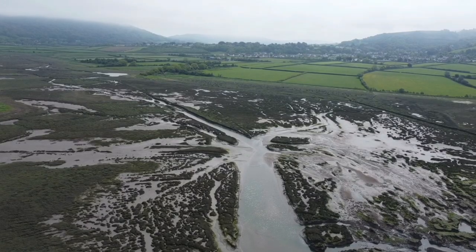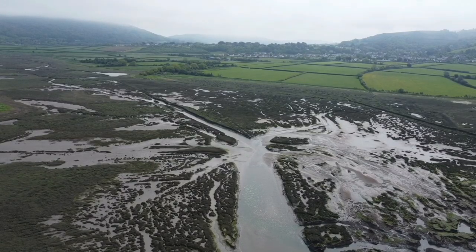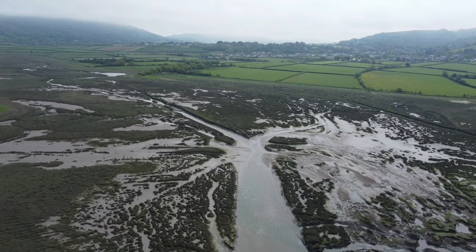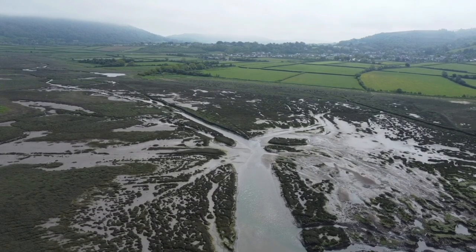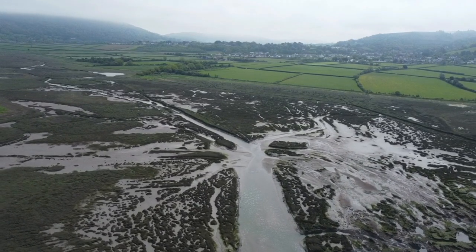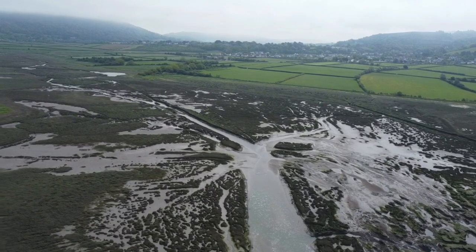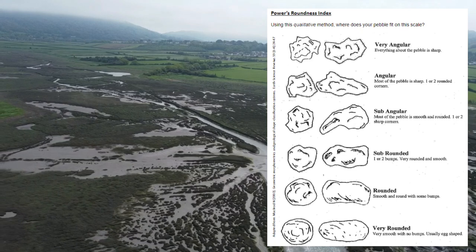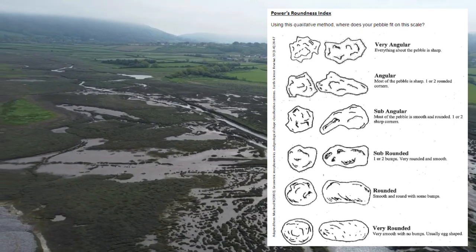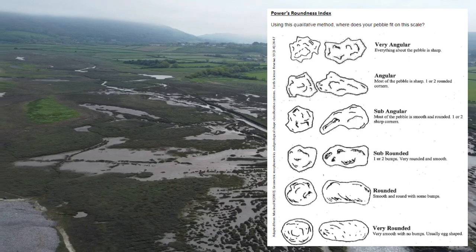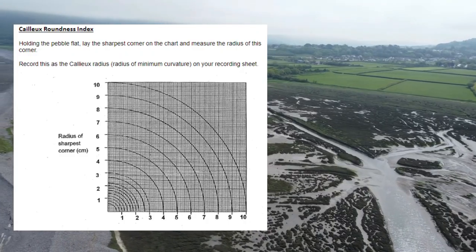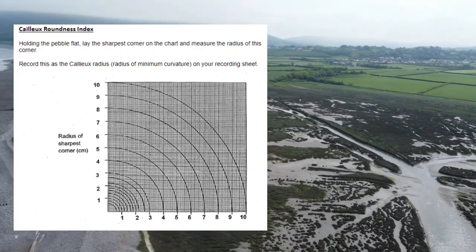How would we investigate changes in sediment size? We would measure the long axis, and perhaps the B and C axis too, at various points across the beach to look for these changes. Any angularity changes might be identified using Power's roundness index, which is quite easy to use, and we could use the Caillou roundness index as well, which requires a little bit more data manipulation.